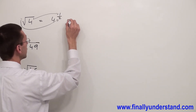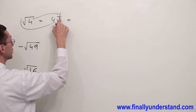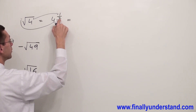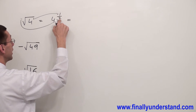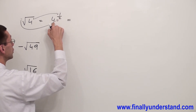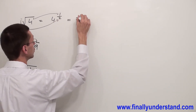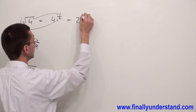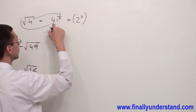Next, I have to look always at the denominator of my fraction. I have 2. I have to ask myself the question: what number raised to the second power is going to give me 4? We know that 2 to the second power is equal to 4.